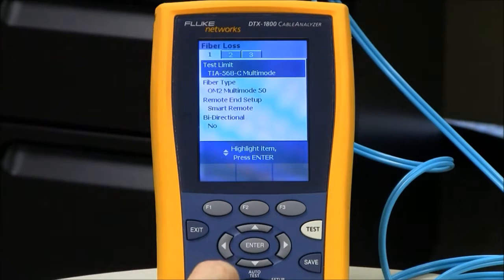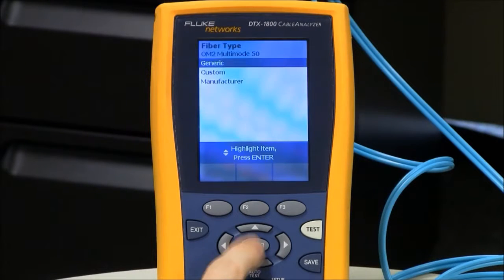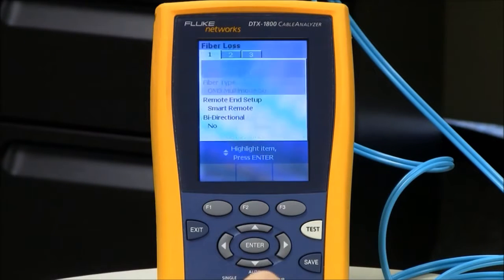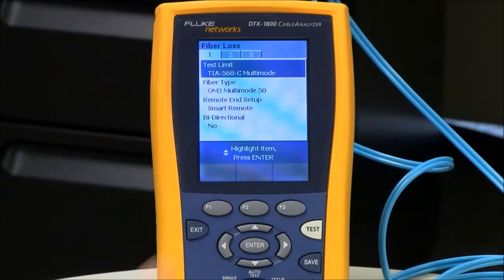My fiber type is currently selected as OM2. That's an issue because I'm testing OM3 today. I need to change that to OM3. Why is that important? At the bottom of your LinkWare test report, you're going to see a list of supported applications. That list is going to be dependent upon this fiber type selected here. If I'd left it as OM2, any links greater than 82 meters, 10G base SR would not show up at the bottom. So this is an important setting.